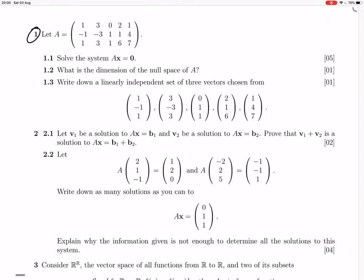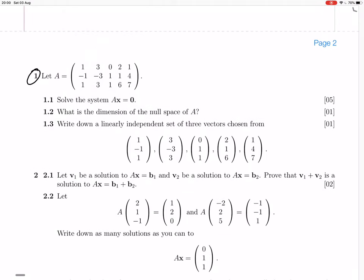We're doing question 1 of 2018 test 1. They give us matrix A with 3 rows and 5 columns. We need to solve the system Ax equals 0.